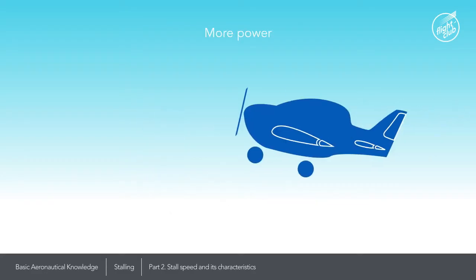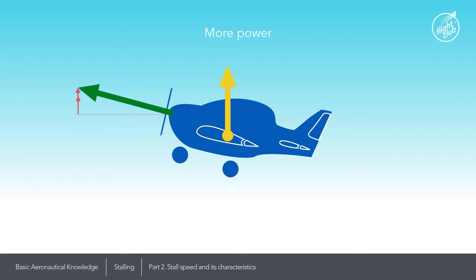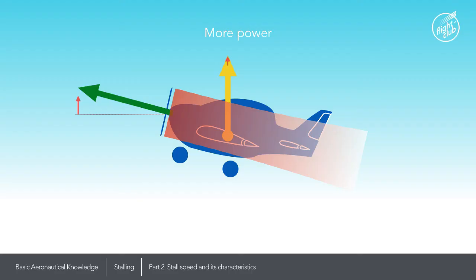More power. More power has an opposite effect on stall speed by reducing it. For an aircraft flying at 16 degrees angle of attack, the component of the thrust vector points upwards. Increasing power increases thrust, which contributes to the lift. Furthermore, the stronger slipstream, which affects the inboard section of the wings, speeds up the airflow and helps to generate more lift.